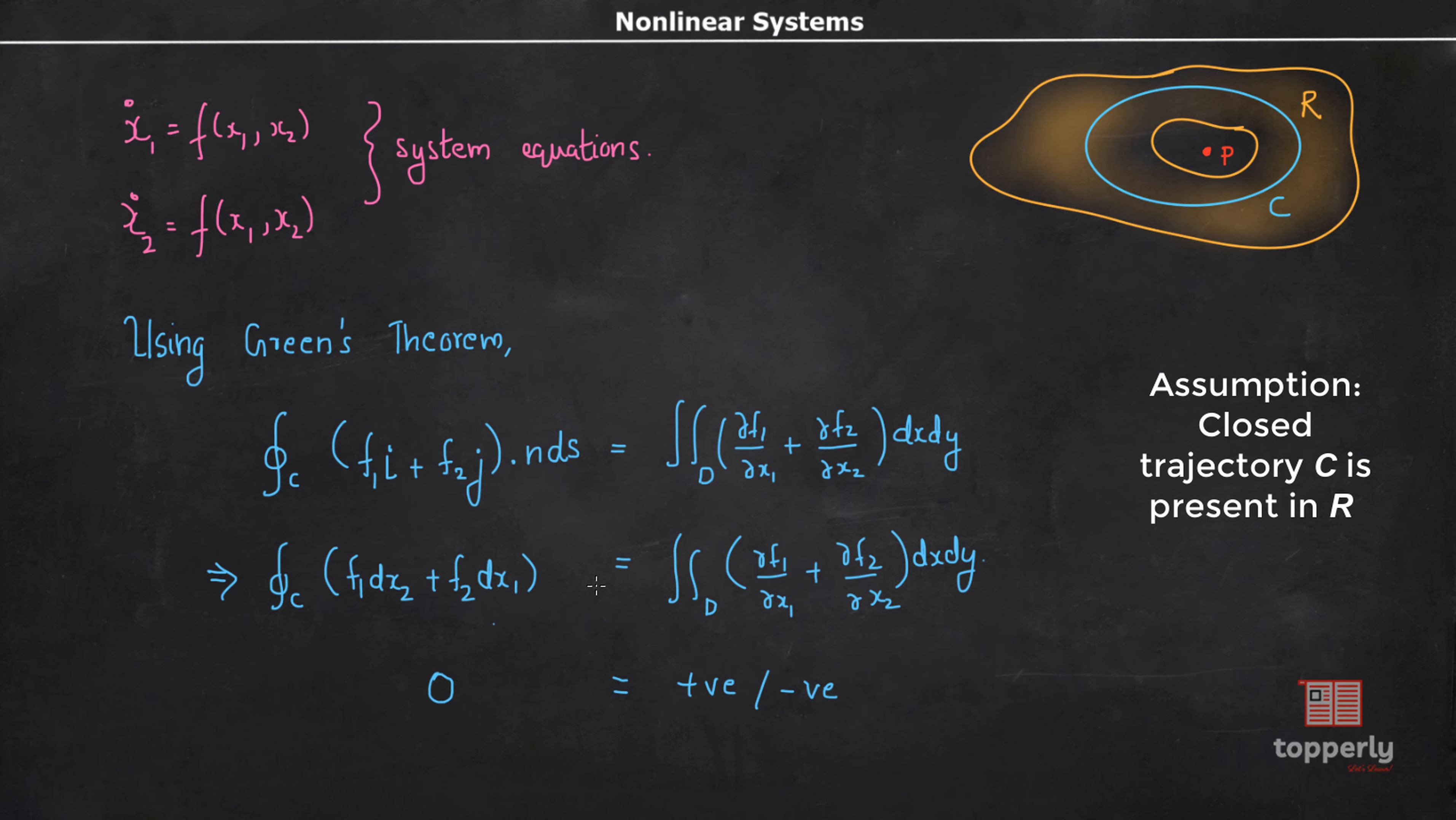Why? Because for C to be a closed trajectory, C should be tangent to the velocity field f₁i plus f₂j defined by the system. This means that the normal vector n to C is always perpendicular to the velocity field. Therefore, the dot product of f₁i plus f₂j dot n is always zero. That is, the integral on the left hand side of this equation is zero.